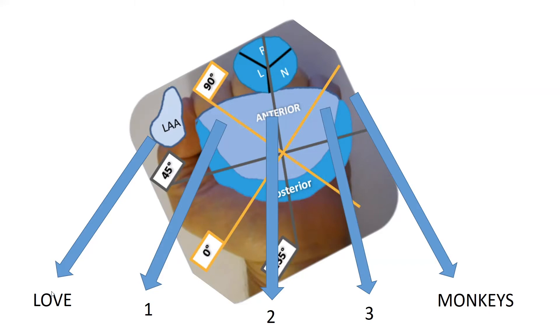The love represents the most lateral aspect of the mitral annulus, which is in the region of left atrial appendage. The 1 represents A1P1 coaptation, the 2 represents A2P2 coaptation, and the 3 represents A3P3 coaptation. And M stands for the most medial part of the annulus.